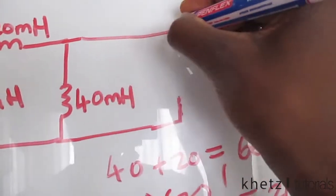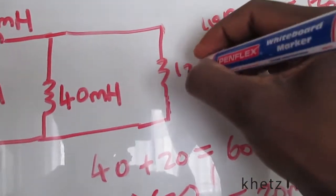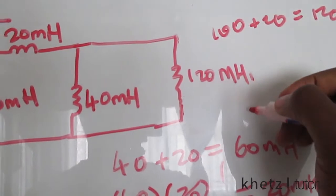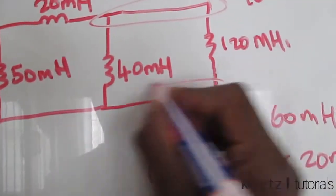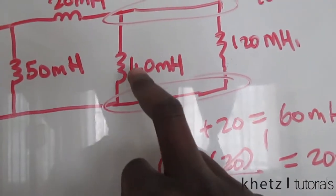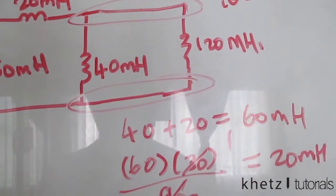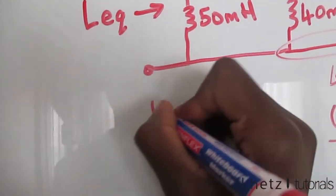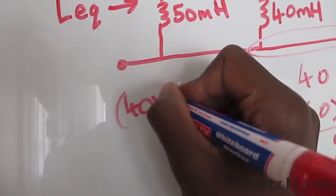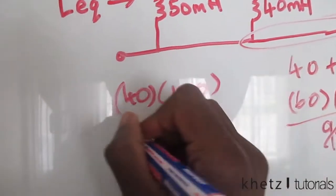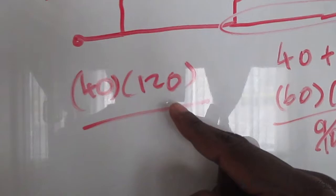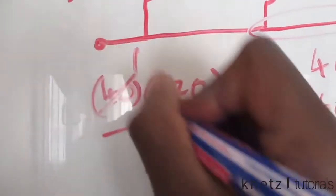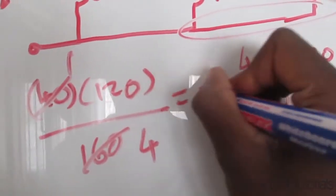We replace those two with the equivalent: 120 millihenries. This 120 millihenries shares two nodes with the 40 millihenries, so we apply the parallel formula again: 40 multiplied by 120 divided by 40 plus 120, which is 160. That gives us 4800 over 160, which is 30 millihenries.